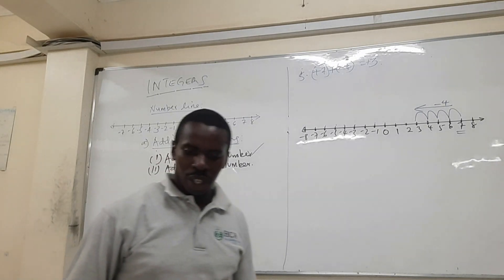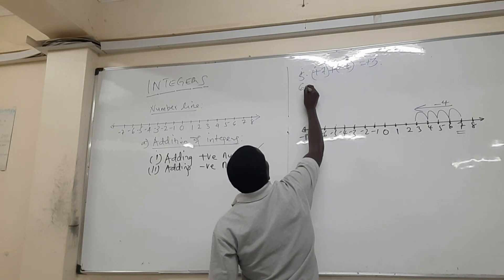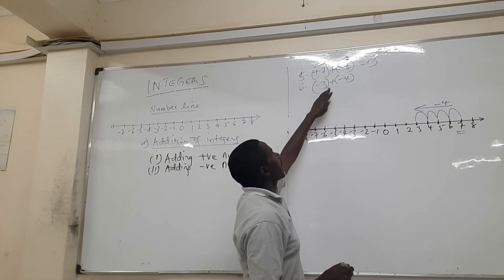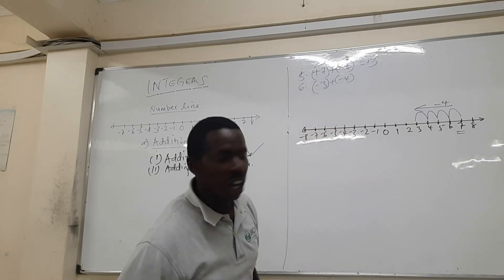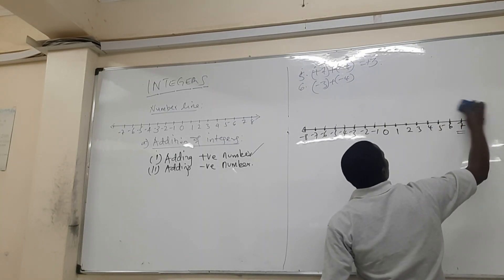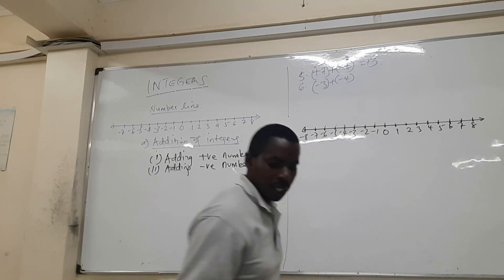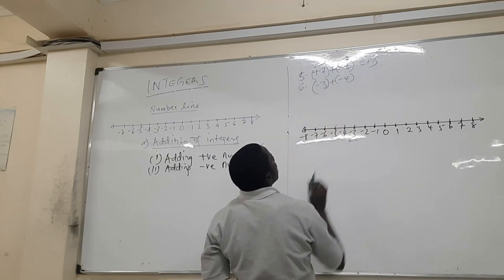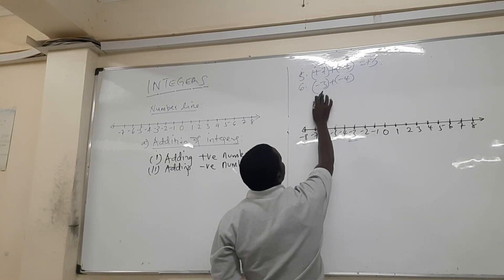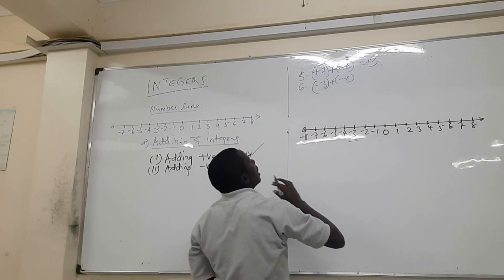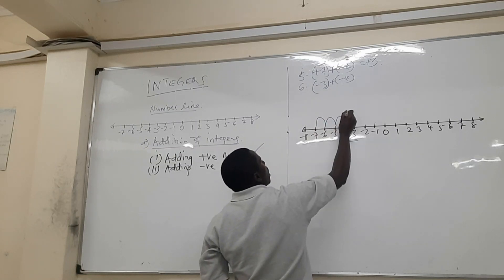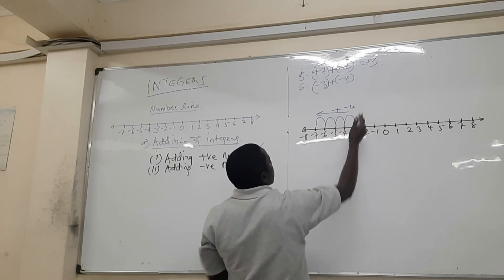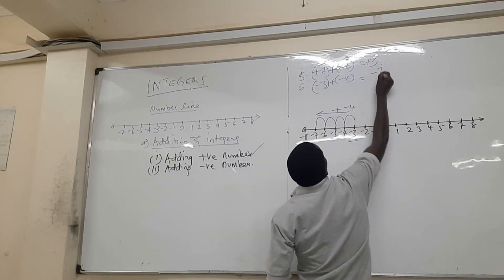Example six: minus three plus minus four. In this case, we are adding a negative number, so we move on the left-hand side of the number line. We locate minus three on the number line, and we are adding minus four, so we move four steps to the left: one, two, three, four. Our answer is minus seven.